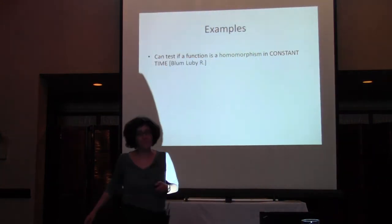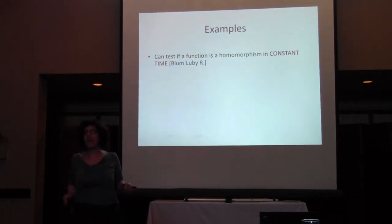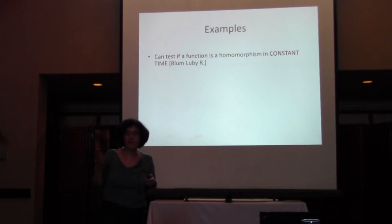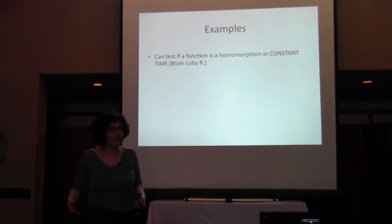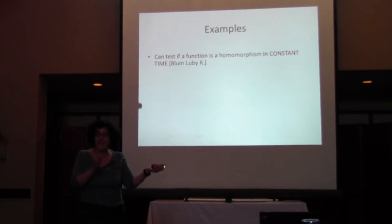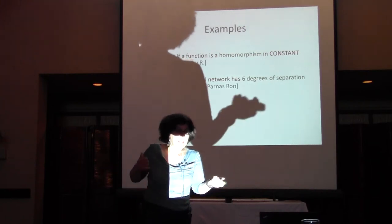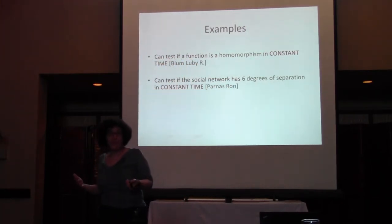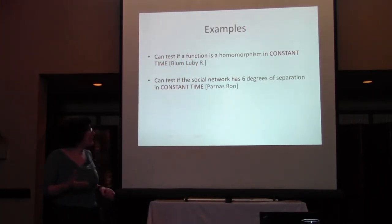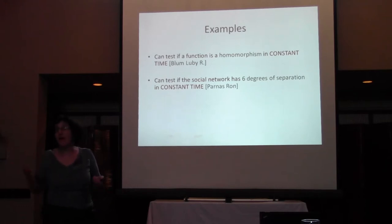Let me give some examples. If I have the input-output table of a function, I can test if the function is a homomorphism in constant time, independent of the domain size — passing functions that are homomorphisms and failing functions that are epsilon-far. For the social network problem, we can test if the social network has the six degrees of separation property, also in constant time.